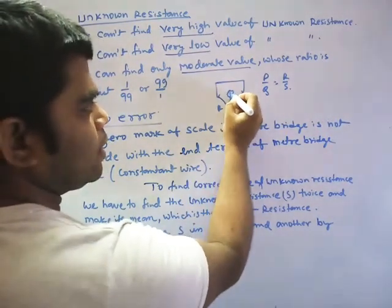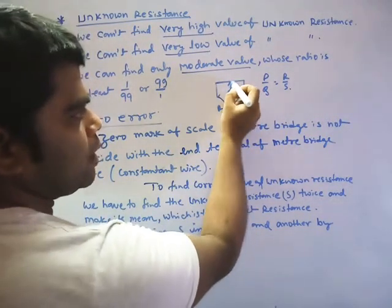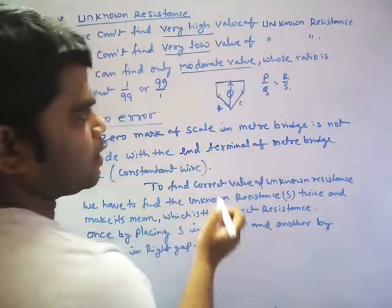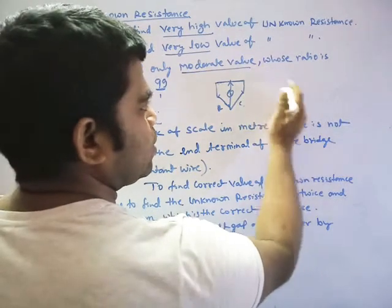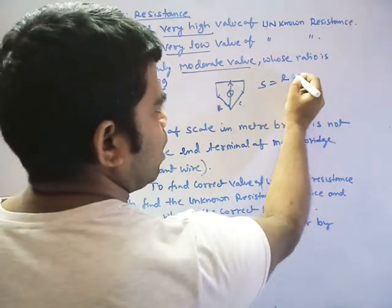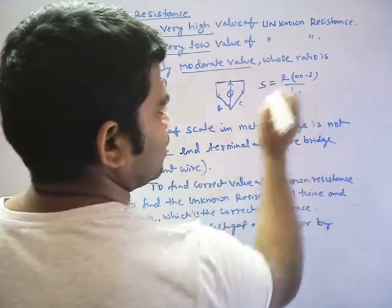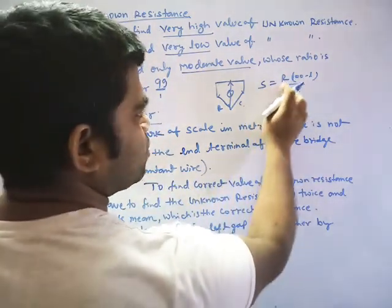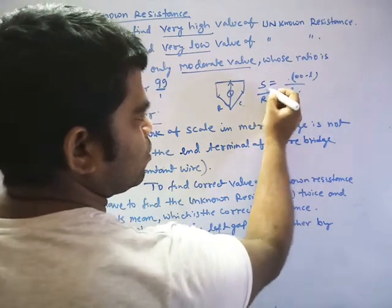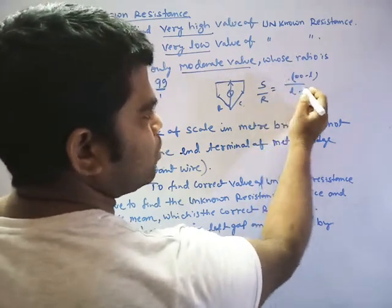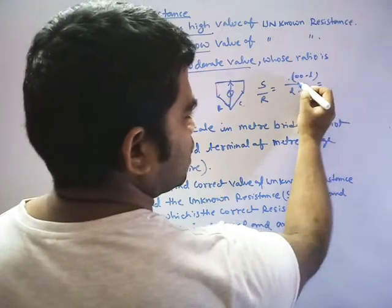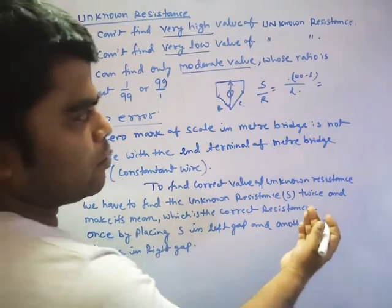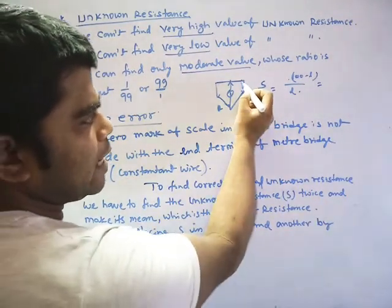The galvanometer touches a point at which it shows null. As we have seen the null, we have seen the length here. We have the formula S equals R times 100 minus L by L. So what is this? S by R. So S by R should be in the form, suppose, as I told you, this is 100 centimeter.